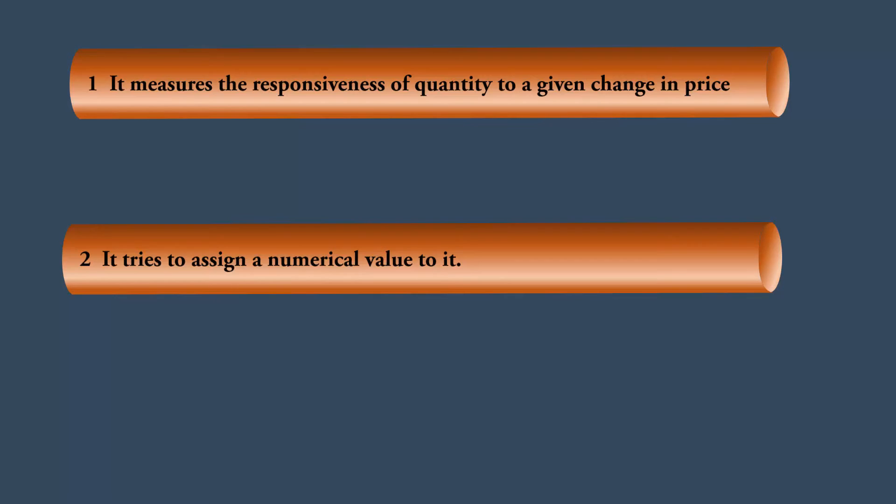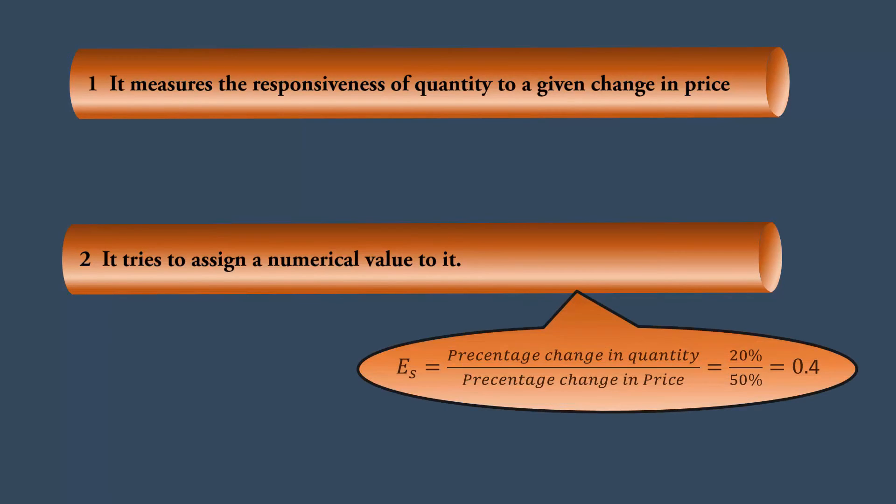For example, in the present case, the elasticity is 0.4. It is arrived at by dividing the percentage change in quantity supplied with percentage change in price. That is, 20% divided by 50% equal to 0.4.